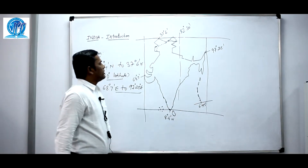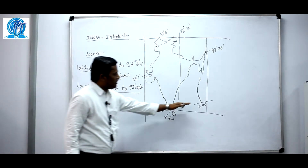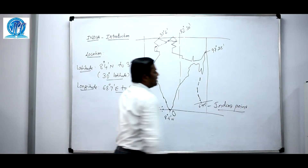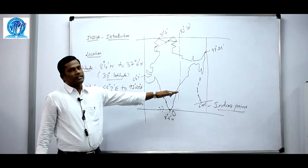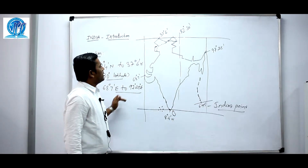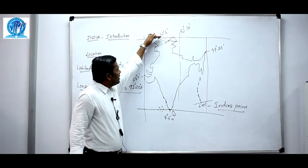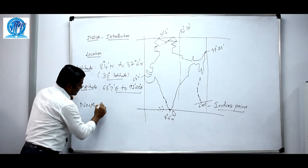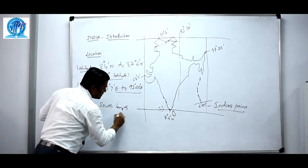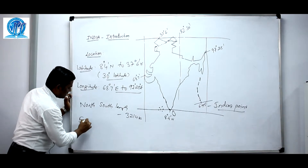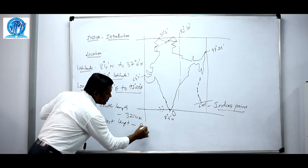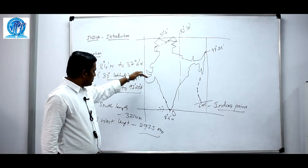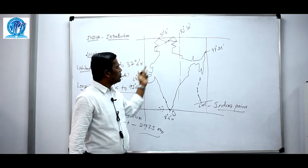Including islands, the southernmost point of Indian territory is Indira Point, also called Pygmalion Point, located in the Nicobar Islands. The north-south length of our country is 3,214 kilometers, and the east-west length is 2,933 kilometers.